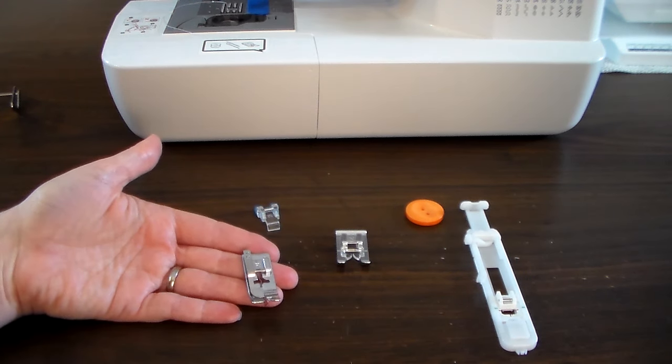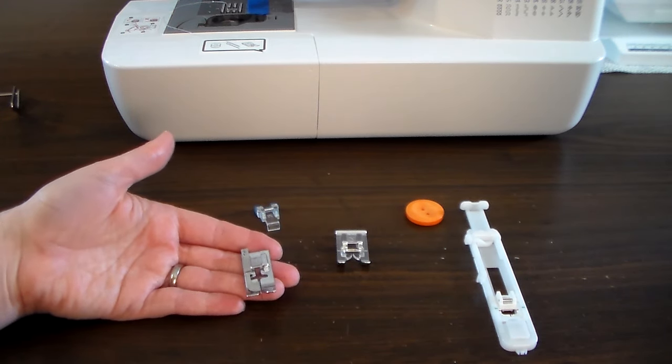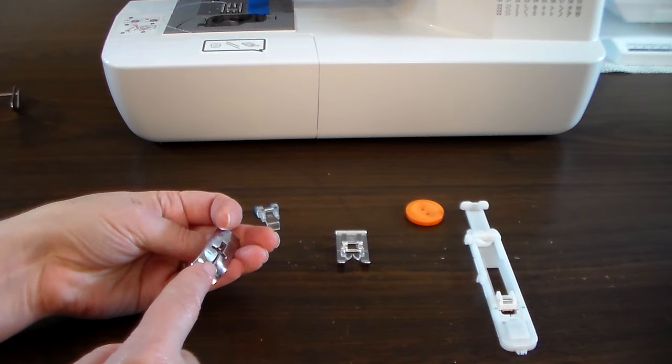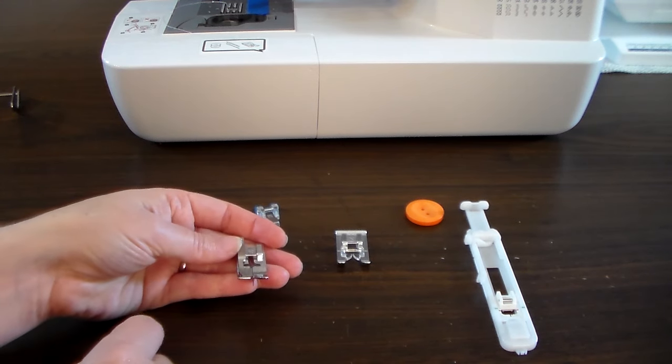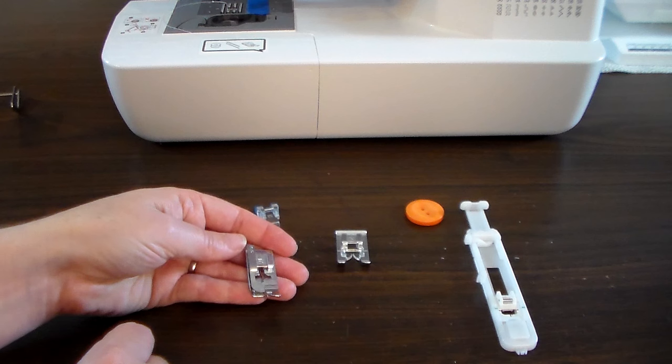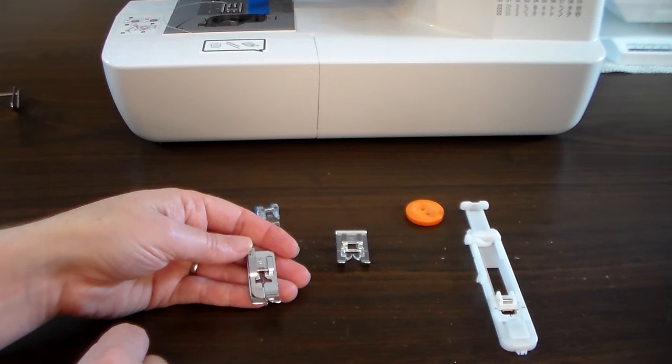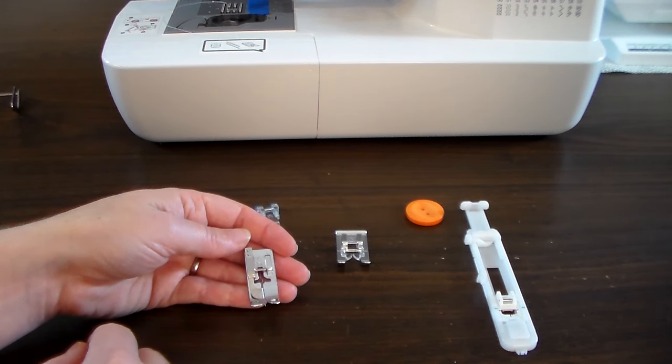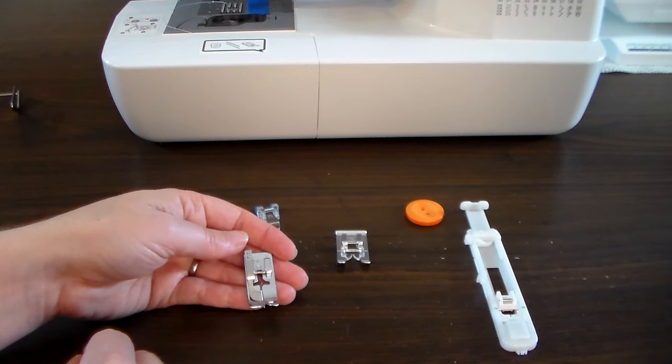This is your blind hem foot. It's used to do a blind hem and has a guide that comes down the middle. You'll line that guide up with the fold of your blind hem on your garment, and it'll allow you to keep it nice and straight.